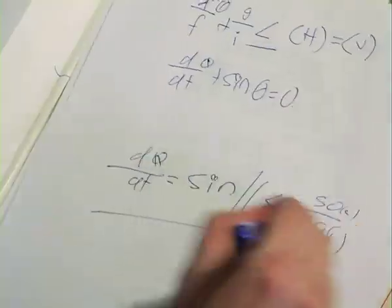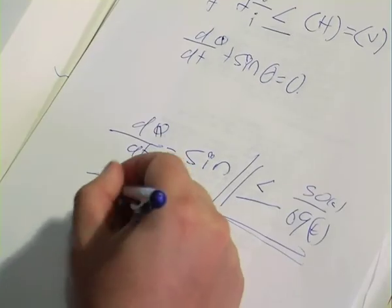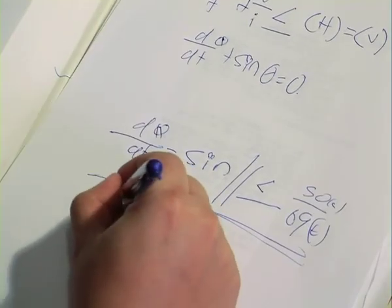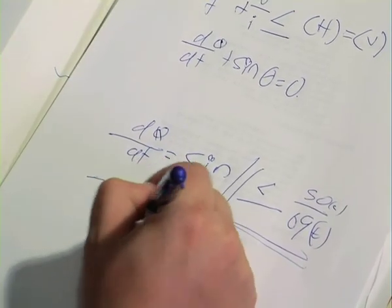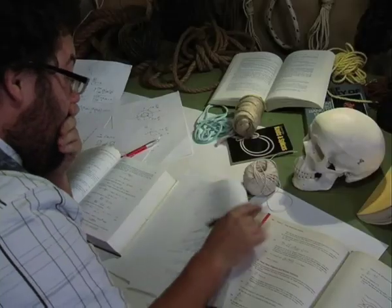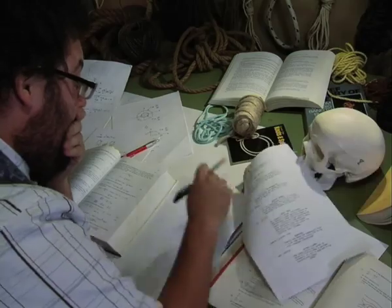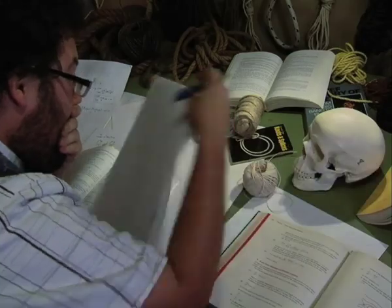But if one looks off to the side of the sun, one can make out many features. Look too long, and one can become blinded by the image of that final goal. Such as it is with rope theory.